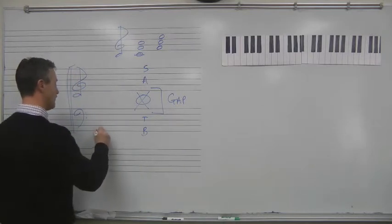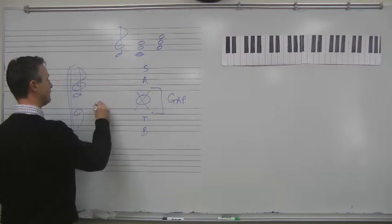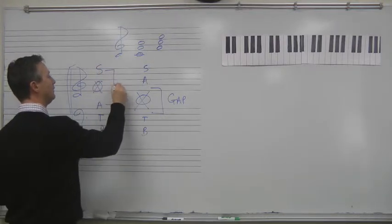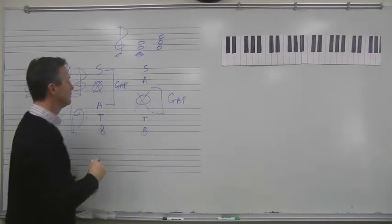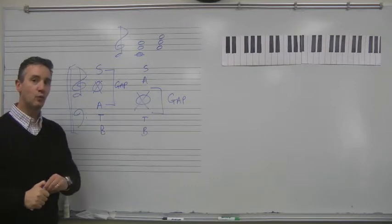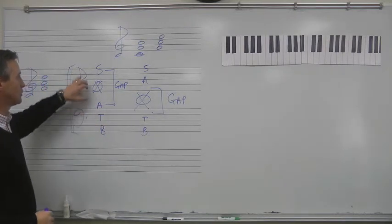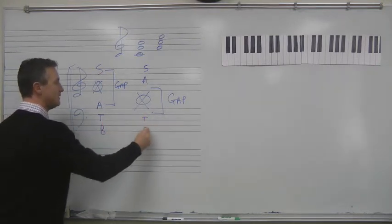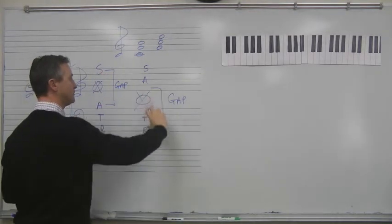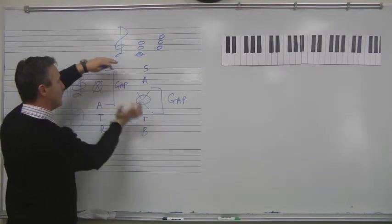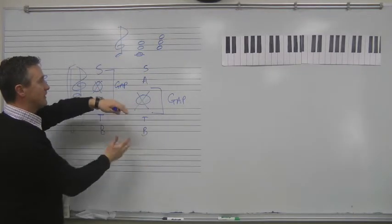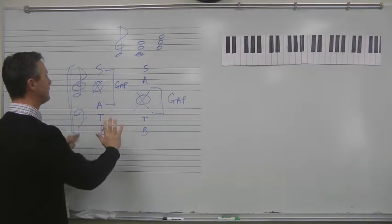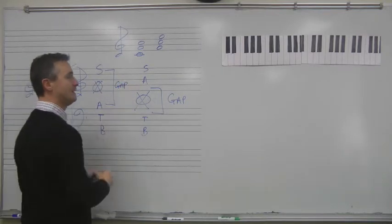Similarly, you want to avoid a gap between the soprano and the alto. That is also generally a weaker voicing, a weaker spread. If you're going to have a gap, it's usually between tenor and bass. You do not want a gap between soprano and alto, or alto and tenor. Either keep those voices packed up close to each other, with a distance between the tenor and the bass, or spread the voices out so they are more or less evenly spaced from one another.